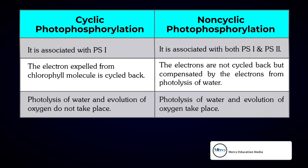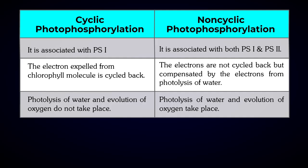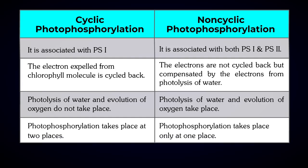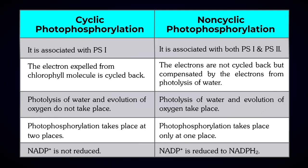In cyclic photophosphorylation, the photolysis of water and evolution of oxygen do not take place, whereas both occur in non-cyclic photophosphorylation. In cyclic photophosphorylation, phosphorylation takes place only at one place, while in non-cyclic photophosphorylation it takes place at two places. Finally, NADP+ is not reduced in cyclic photophosphorylation, but NADP+ is reduced to NADPH2 in non-cyclic photophosphorylation.